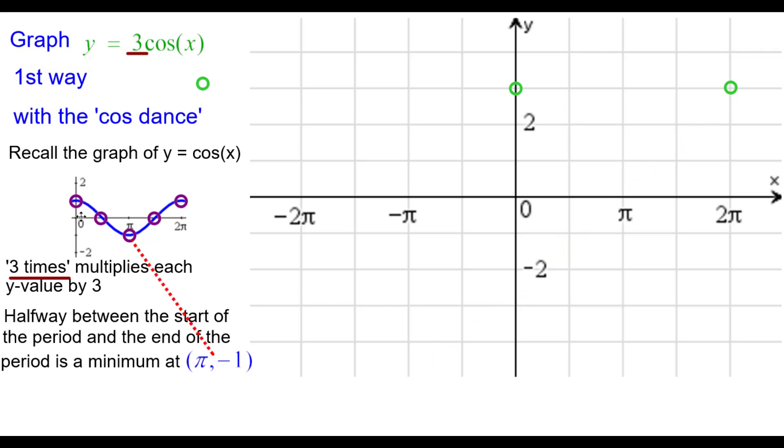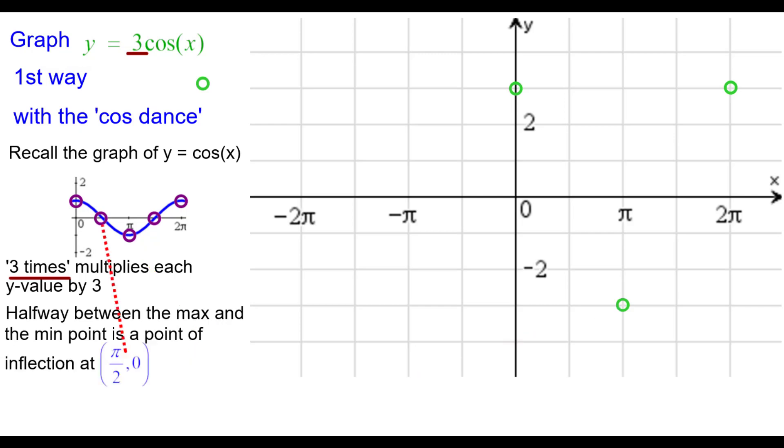Halfway between this max and this min is a point of inflection at pi over 2, 0. That's being vertically stretched by a factor of 3. So we multiply the y value by 3 and 3 times 0 is 0. So it remains unchanged. It's at pi over 2, 0.